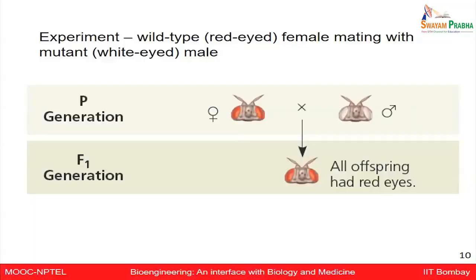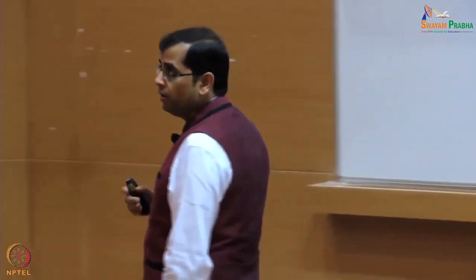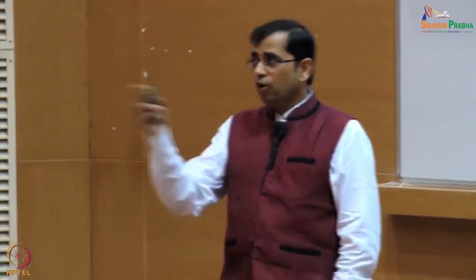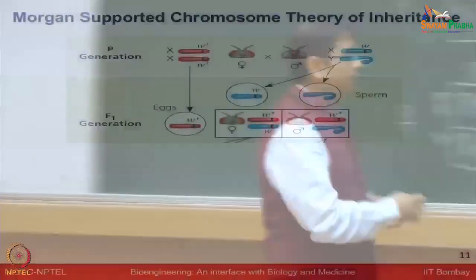Morgan took a wild type female fruit fly as well as a mutant white-eyed male fruit fly and then observed their progenies in the F1 and F2 generation. In the parent generation the female is red-eyed and the male is white-eyed. In the F1 generation all the offspring showed red eyes — just as in Mendel's experiments where the dominant trait appeared in all F1. Now he wanted to follow this cross into the F2 generation.